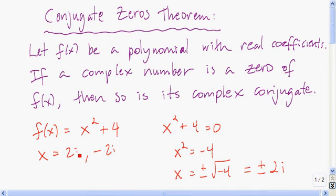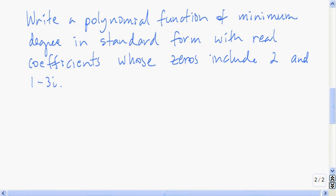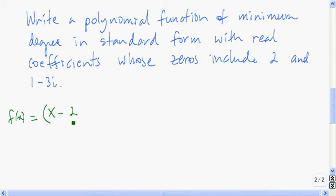Whenever we have a complex number that is a zero of a polynomial with real coefficients, its complex conjugate is also going to be a zero. Now let's do this next example. We want to write a polynomial function of minimum degree in standard form with real coefficients, whose zeros include 2 and 1 minus 3i. Since 2 is a zero, we know that x minus 2 is going to be a factor. Minimum degree means we use the smallest multiplicity possible, which is 1.